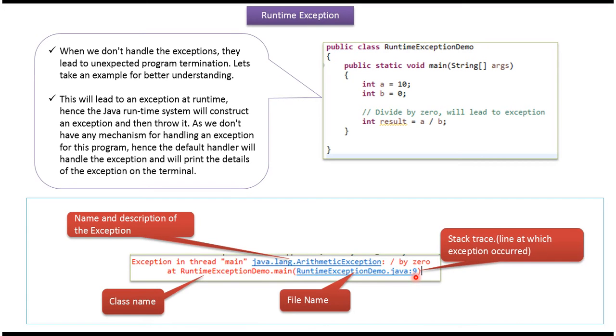The filename is RuntimeExceptionDemo.java. This is the stack trace showing the line at which the exception occurred. In this case, the exception occurred at line number 9.